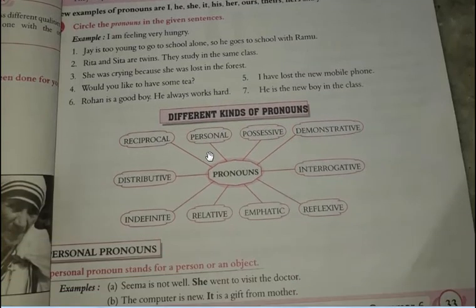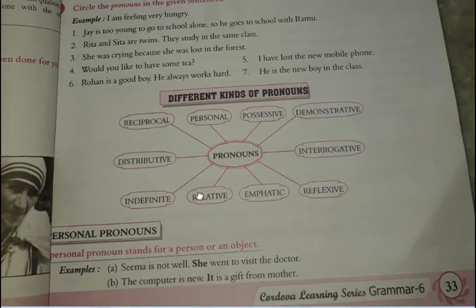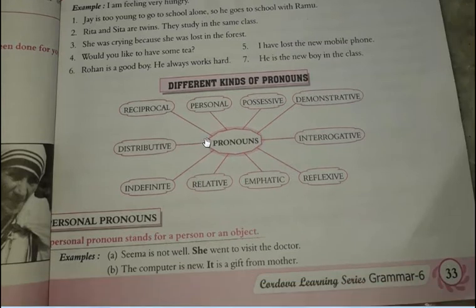Now there are different kinds of pronouns: personal pronouns, possessive pronouns, demonstrative, interrogative, reflexive, emphatic, relative, indefinite, distributive, and reciprocal. Don't take tension — we will do them one by one and understand each one clearly. First we have personal pronouns. Personal pronouns stand for a person or a thing.